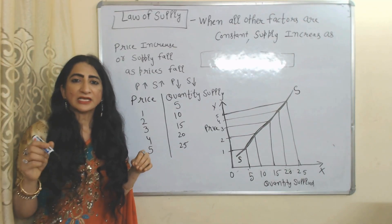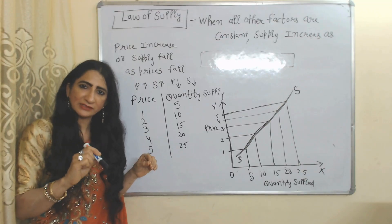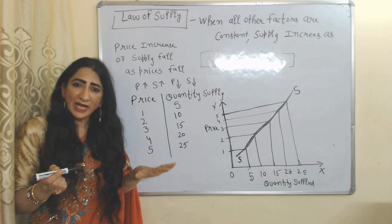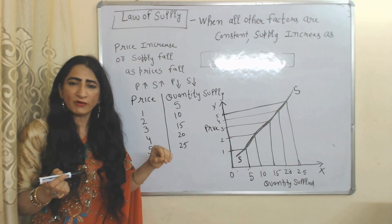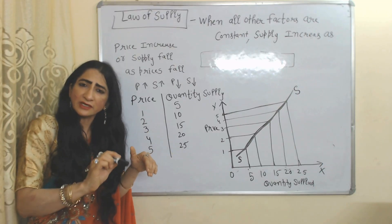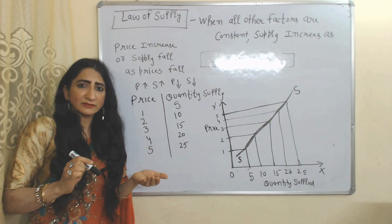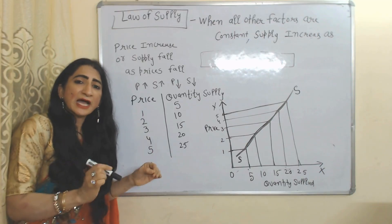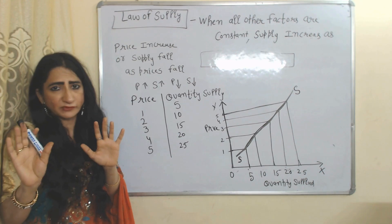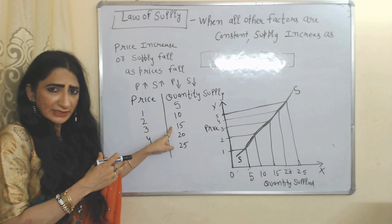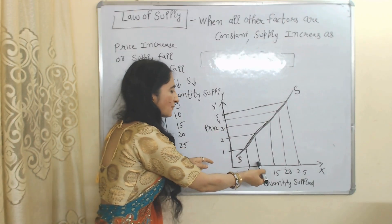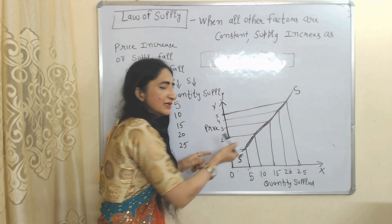Now we are going to talk about the law of supply. There are many factors that can influence supply, but keeping all other factors constant, as price increases supply increases, and as price falls supply also falls — this is called the law of supply. It tells us a direct relationship between price and supply. In the diagram, the x-axis shows quantity supplied and y-axis shows price. As price increases, supply also increases, and the SS curve is our supply curve showing this direct relationship.